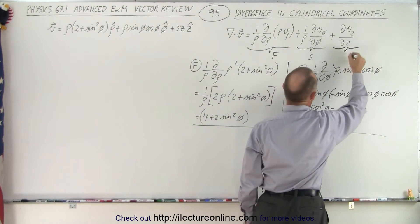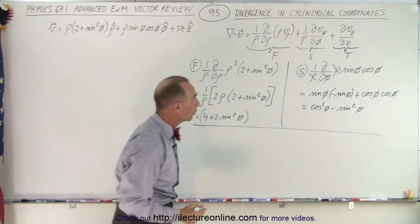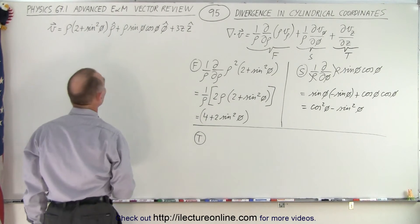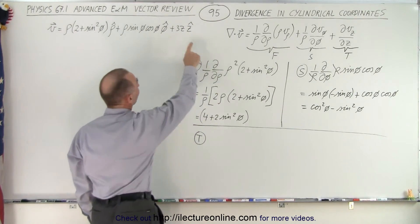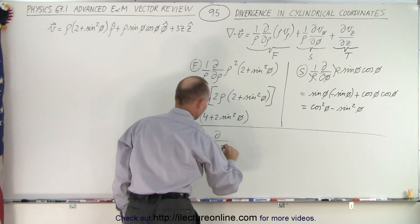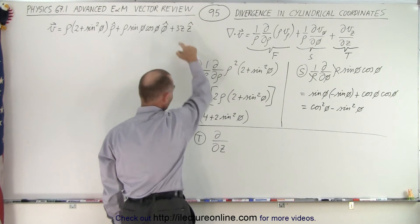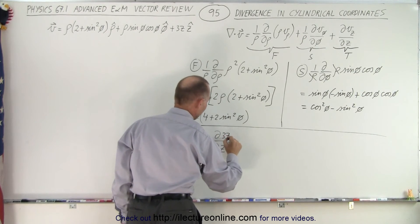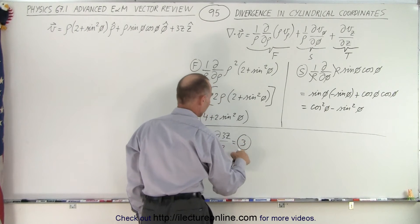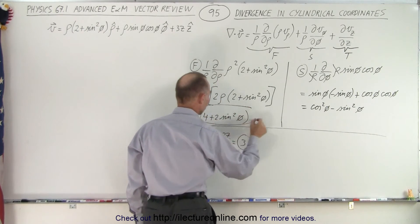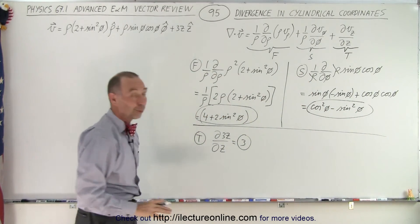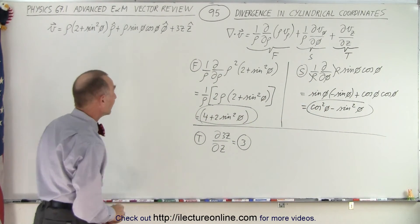Now let's do the third component. For the third portion, we take the partial derivative of the z component with respect to z. We need the partial derivative with respect to z of the z component of the vector, which is 3z, and that simply equals 3. So there is the first, the second, and the third answer.